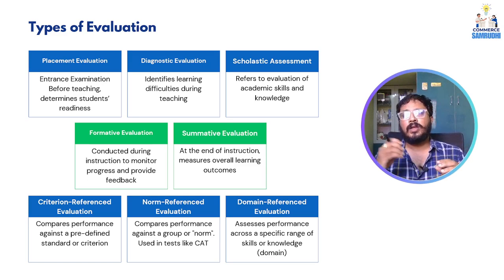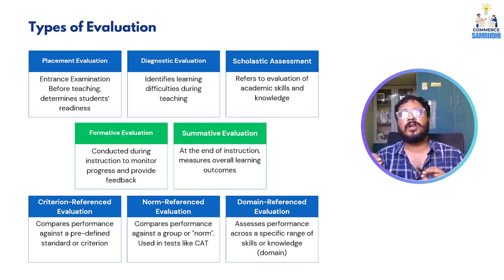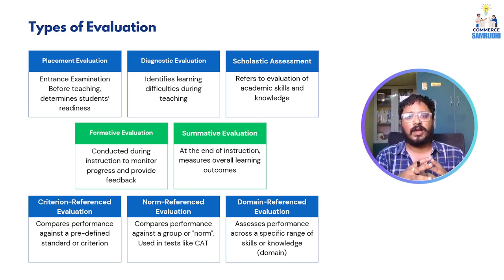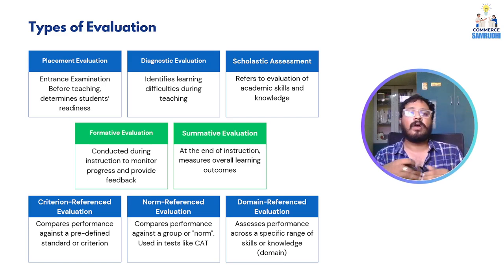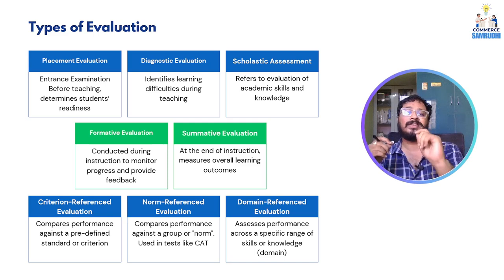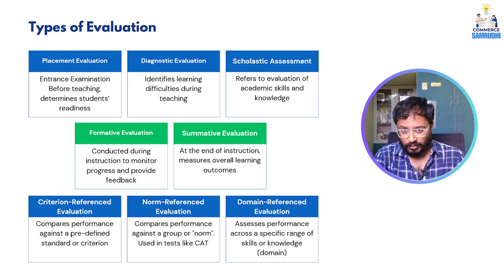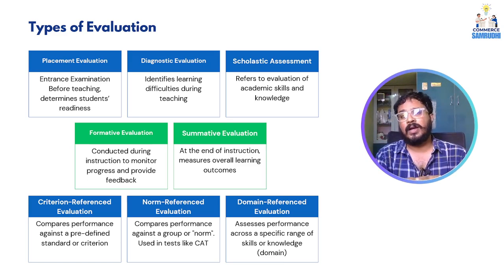Criteria-referenced evaluation: for example, in a typing exam, the criteria is 30 words per minute. If you can type at least 30 words per minute, you are qualified. If not, why were you not able to achieve it? Corrective actions are taken. Norm-referenced evaluation compares one student against an entire group — like CAT exam or UGC NET — where results are given in percentiles showing your performance against other students.